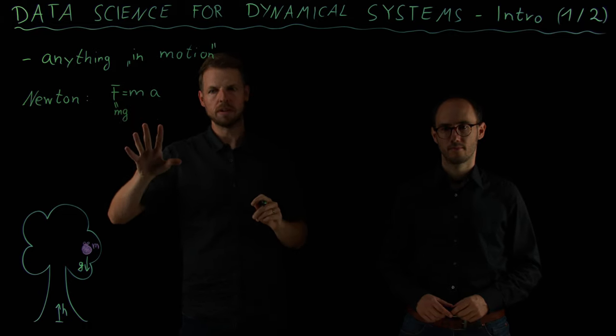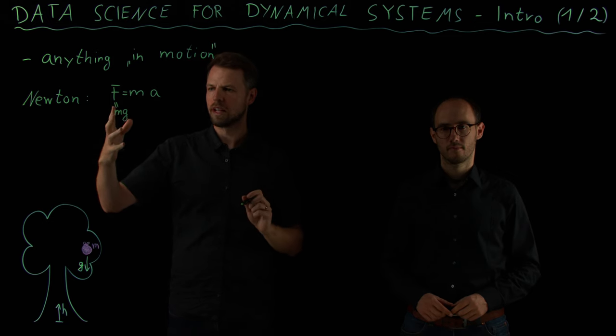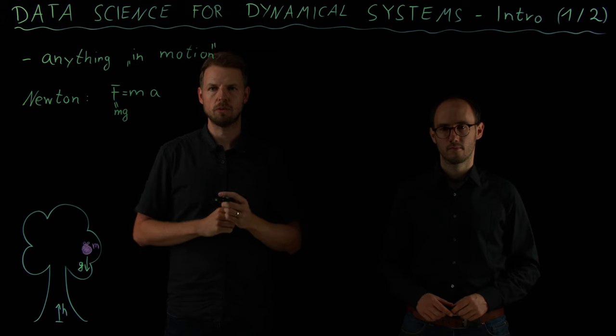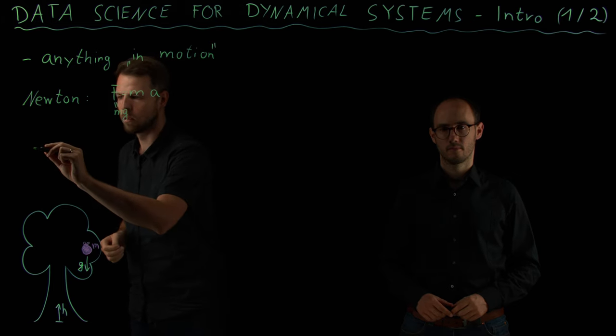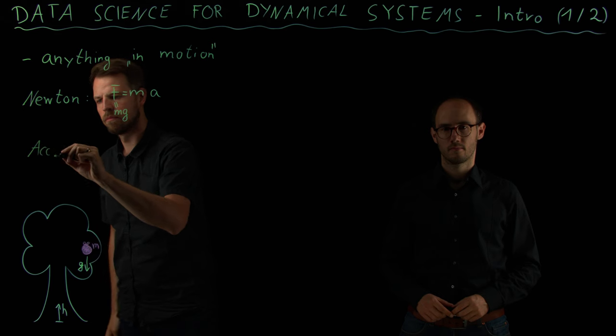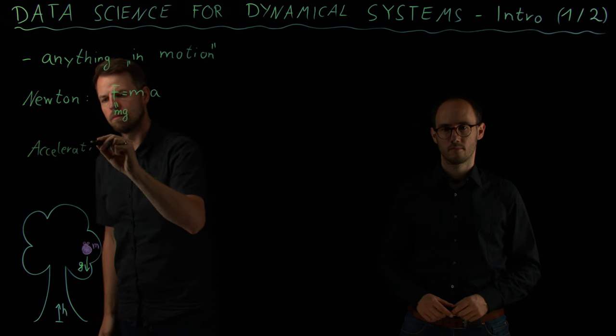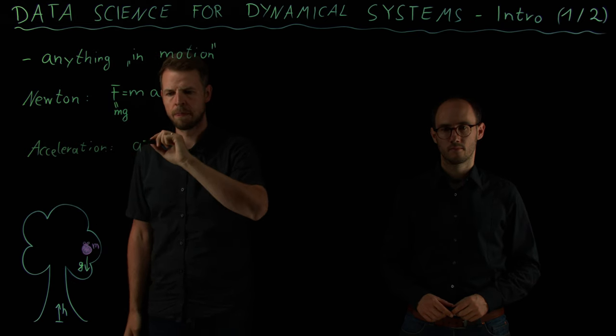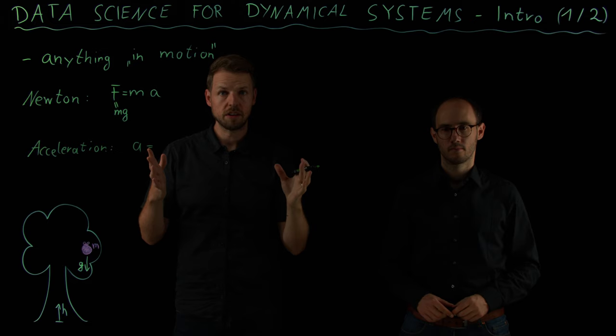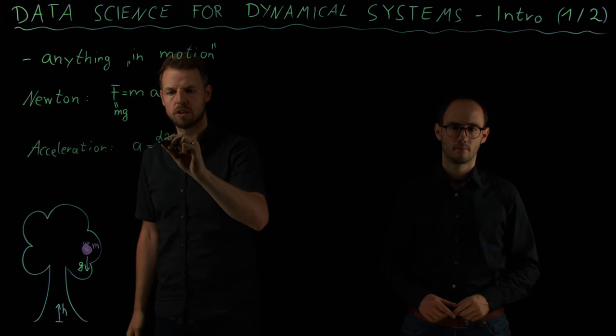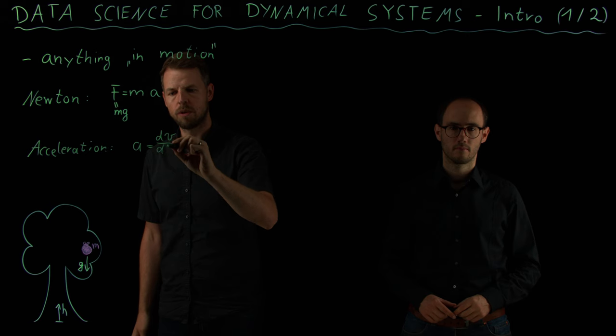So this is our starting point, a physics law that we know which we can use to derive a model for how the apple is going to move. What we have first is the acceleration. This is what I denote by a, which is how much the velocity changes over time. So it's the derivative of the velocity, which I'm going to denote by v, with respect to time.